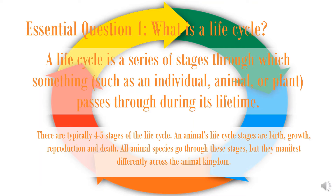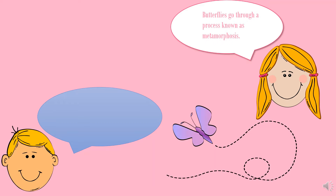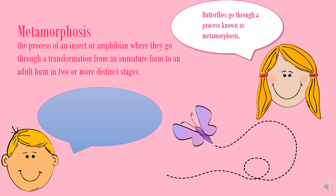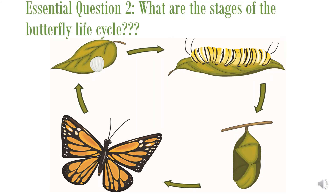Butterflies go through a process known as metamorphosis. Metamorphosis is the process of an insect or amphibian where they go through a transformation from an immature form to an adult form in two or more distinct stages. Metamorphosis is a term we use to describe a butterfly's life cycle.